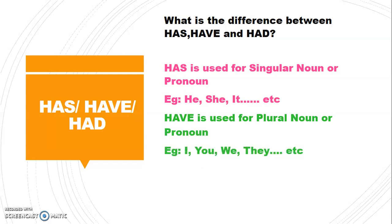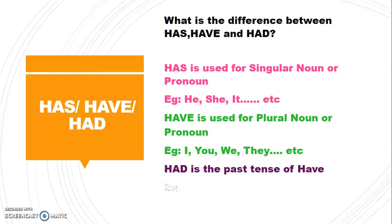Now you will say 'I' and 'you' is not plural, but here it is. Had is the past tense of 'have'. For example, they had, he had, I had, etc.